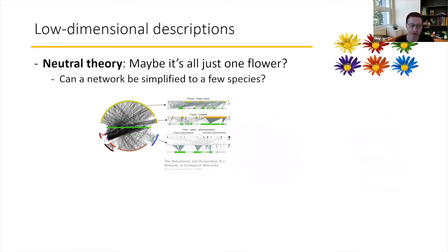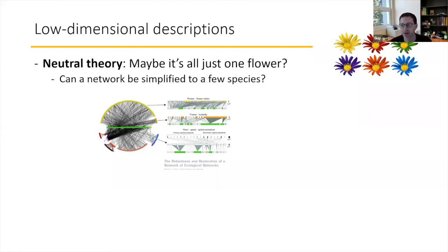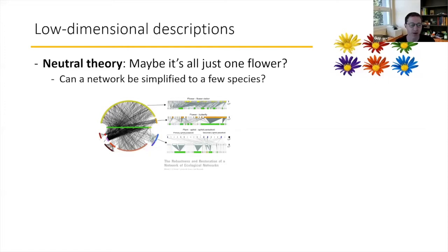When you look at what people are doing theoretically — the frameworks they're using to describe systems — often it's simpler theories than what you might expect for such rich systems. One example is neutral theory, which basically says there are 700 species of flowering plants in some rainforest, but maybe it's all just one flower in terms of how it acts. A related question: can a network of different species be simplified to just a few species? Functional groups can be grouped together.